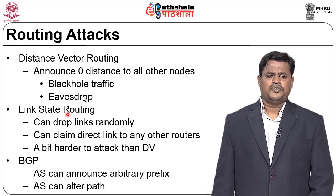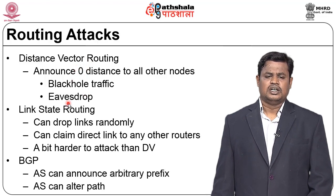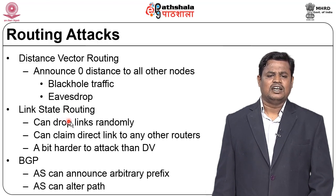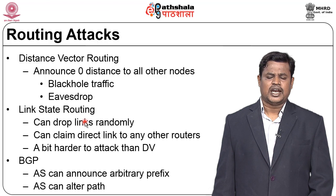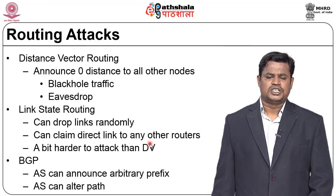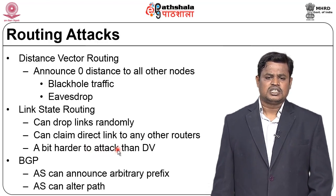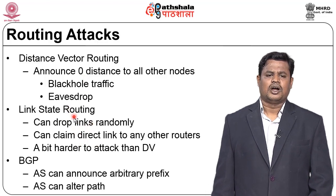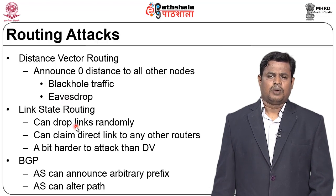In link-state routing, attacks are more difficult than with distance vector because the protocol understands the entire topology and converges quickly. An attacker can randomly drop links, claim they are down, or falsely claim to have a direct link to another router. Distance vector is more vulnerable to routing attacks, while link-state provides some authentication before creating routing tables.